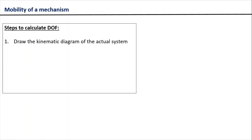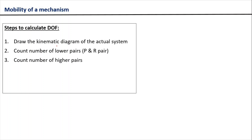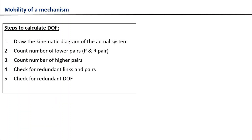The first step is to draw the kinematic diagram of the actual system. The second step is to count the number of lower pairs with single degree of freedom in the kinematic diagram. The third step is to count the number of higher pairs. The fourth step is to check for redundant links and redundant kinematic pairs. The fifth step is to count the number of redundant degrees of freedom. The sixth step is to use the Kutzbach equation to solve for degree of freedom. While solving the numerical problem, we are going to follow these steps in order to calculate the degree of freedom of a mechanism.